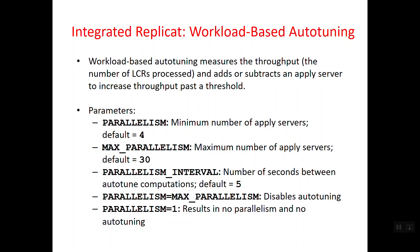Welcome back. This is a continuation of the integrated and classic extract and replicate tuning. I'm going through some parameters for integrated replicate: parallelism, max parallelism, and parallelism interval. Integrated replicate is divided into four internal components, the last being the apply process which directly applies to the target database. You can have multiple appliers with the parallelism parameter. By default the value is 4, even if not specified.